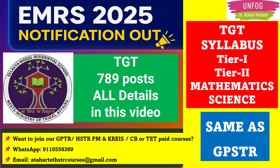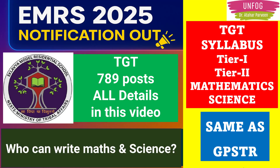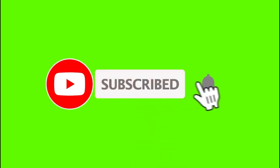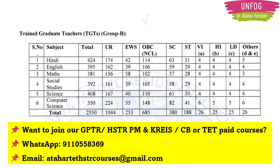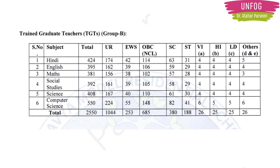The TGT syllabus is more or less the same as GPSTR, and this time they have also introduced descriptive type questions in Tier 2. For TGT, there are 381 posts for mathematics and 408 posts for science, giving a total of 789 posts — which is very large.